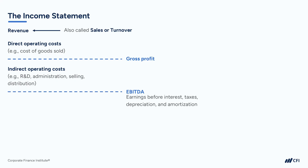In accounting, the terms earnings, profit, and income really all mean the same thing. So when someone talks about earnings, they're talking about profit. Someone may be using the term income, and they're talking about profit. Just be aware that there are many synonyms that are used to refer to the same thing.